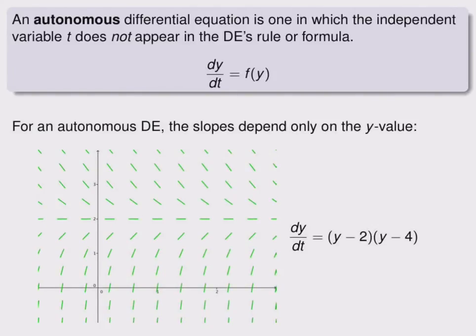A particular kind of differential equation that we're interested in is called an autonomous differential equation. This is one in which the independent variable t does not appear in the DE's rule or formula. We can write this as dy/dt equals some function involving only y.